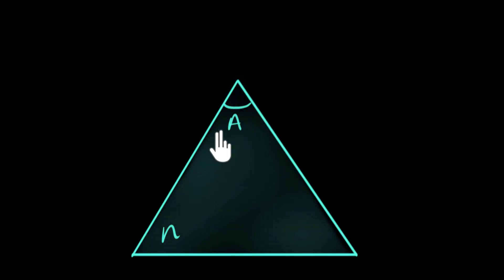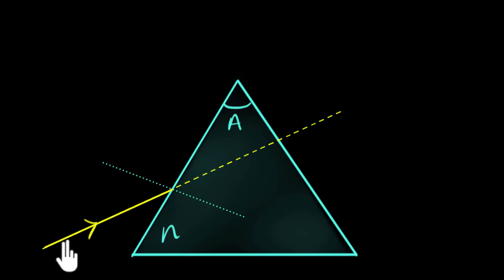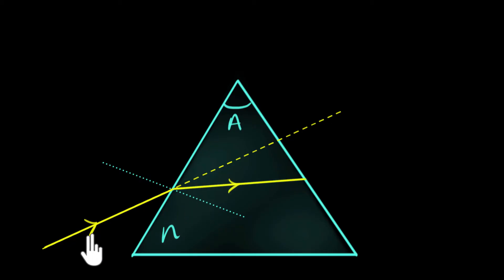Let's say we have a prism in which the refracting surfaces make an angle A, and the material has refractive index N. If you shoot a ray of light on the first surface, it would have gone straight, but it's going to bend. To analyze that bending, we draw a normal. The outside medium is air, so the ray moves from a rarer to a denser medium and bends towards the normal, downwards. The ray of light has bent downwards — let's call that angle D1.